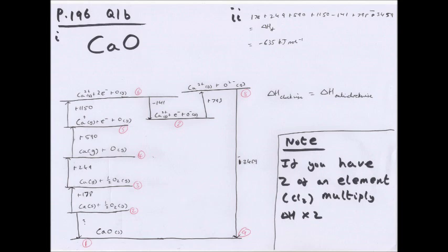Here's how you construct a Born-Haber cycle. I like to start at the bottom with your ionic lattice — calcium oxide solid. Go up one level: from step 2 to 1 is the formation, where calcium solid plus half O₂ forms calcium oxide solid. From step 2 to 3 you're atomizing calcium, so calcium solid becomes calcium gas. From step 3 to 4, oxygen is atomized — half O₂ becomes a single O atom.